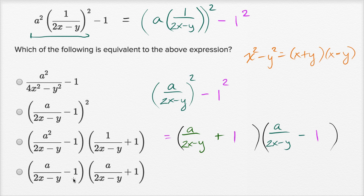But if we look at the choices, this is exactly what we have here. They just swapped the order of these two expressions being multiplied. a over two x minus y minus one, times a over two x minus y plus one. So that's that choice right over there.